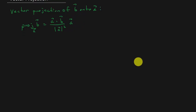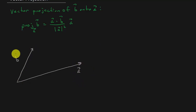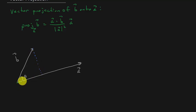So look at this. The vector projection of B onto A — we're going to do B onto A. There's vector A, there's vector B, and there's the angle in between them. So if you take this and you drop it down, then this is your vector projection.